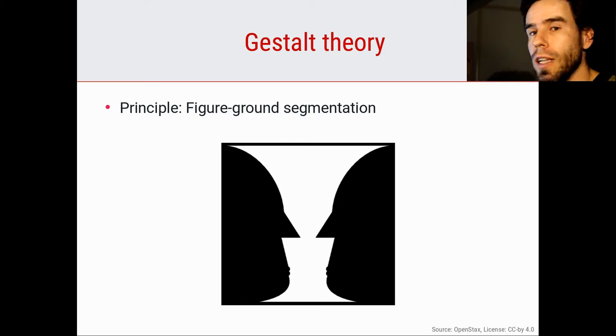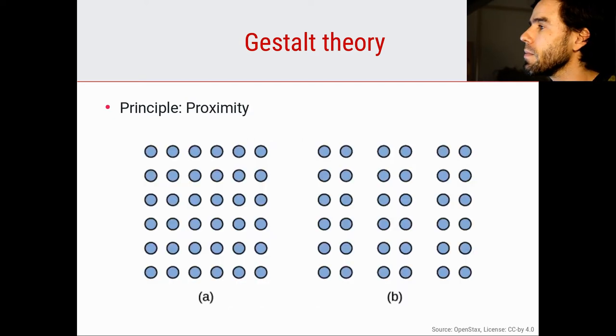This idea that we automatically parse the world into foreground and background is the principle of figure-ground segmentation. If you're looking at my face now, you're seeing my face as the foreground and the background behind me as background. You have automatically made this segmentation. All the Gestalt principles are so simple, which makes them kind of trivial in a way, but still very interesting.